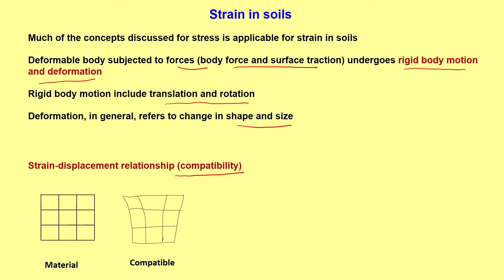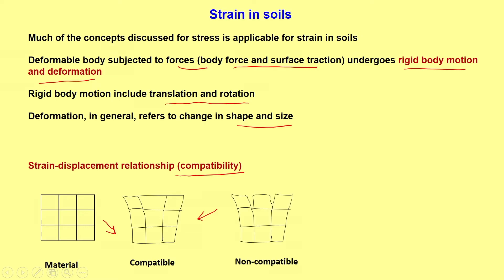Let us say this is the given material. A compatible material when subjected to different forces deforms but does not fail — we can call it compatible. In contrast, when certain fractures are formed under the given condition of external forces, that can be termed non-compatible. Strain–displacement relationship helps to assess the compatibility requirements of a material when it is subjected to different loading. Compatibility is defined using strain–displacement relationship.